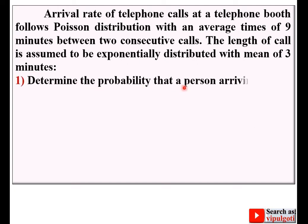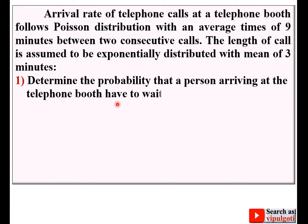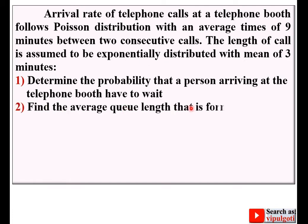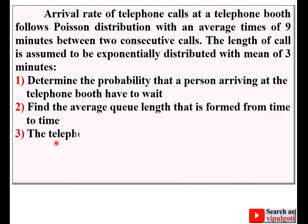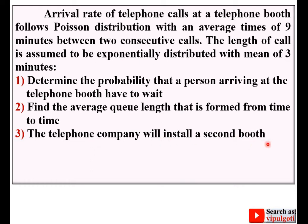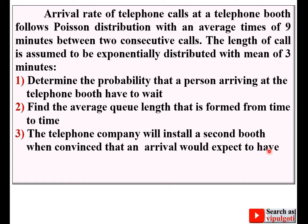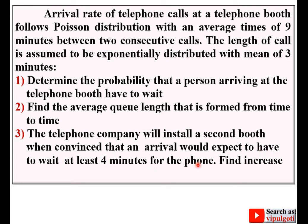The questions are: First, determine the probability that a person arriving at the telephone booth has to wait. Second, find the average queue length that is formed from time to time. Third, the telephone company will install a second booth when convinced that an arrival would expect to wait at least 4 minutes for the phone — find the increase in rate of arrival.